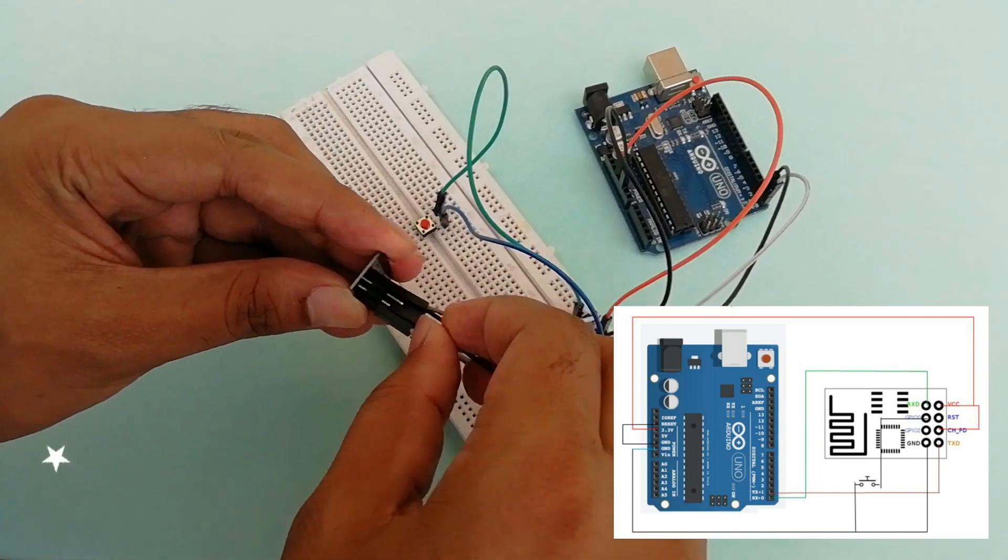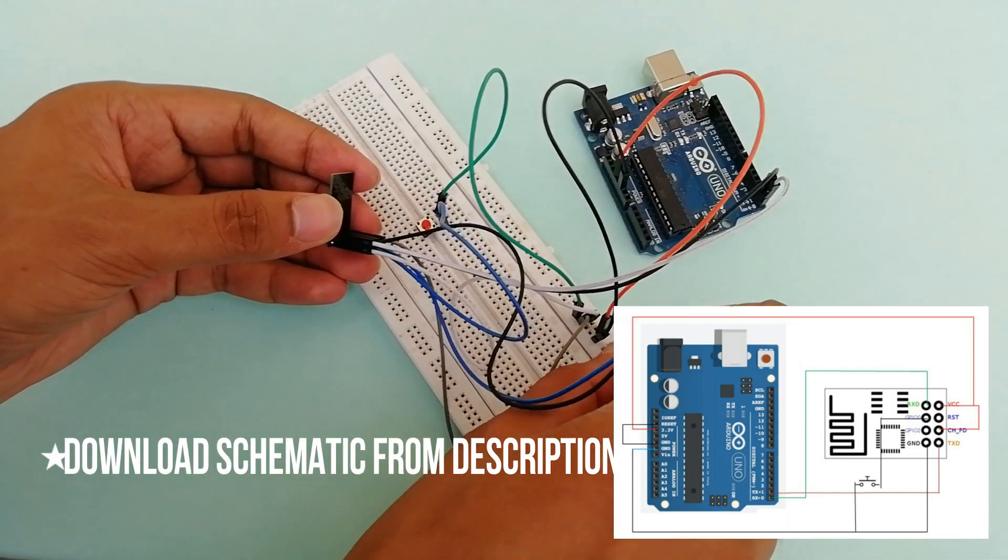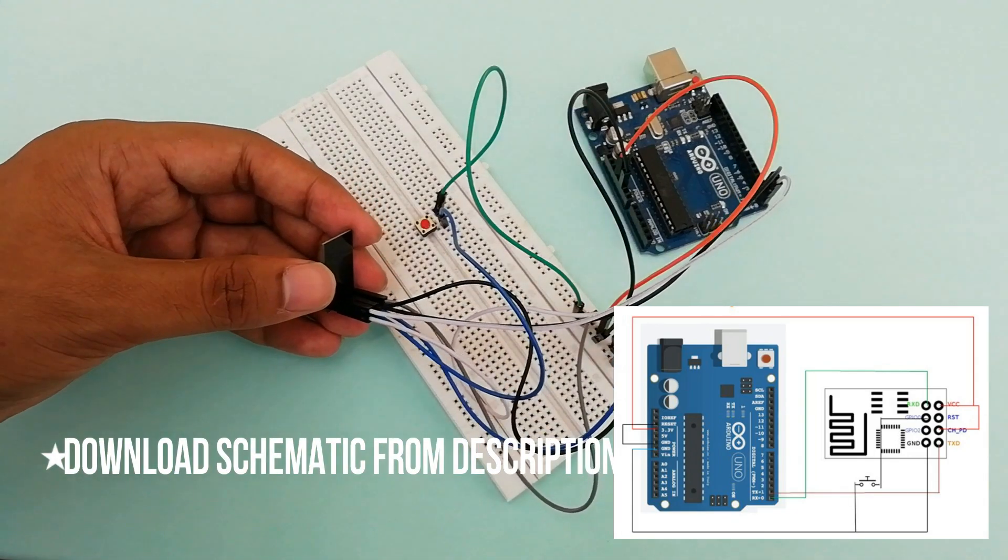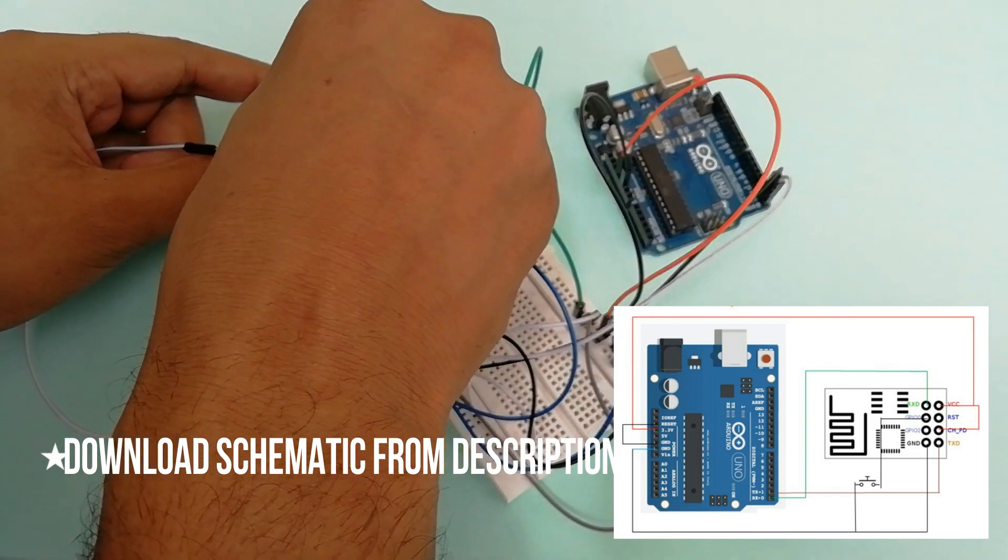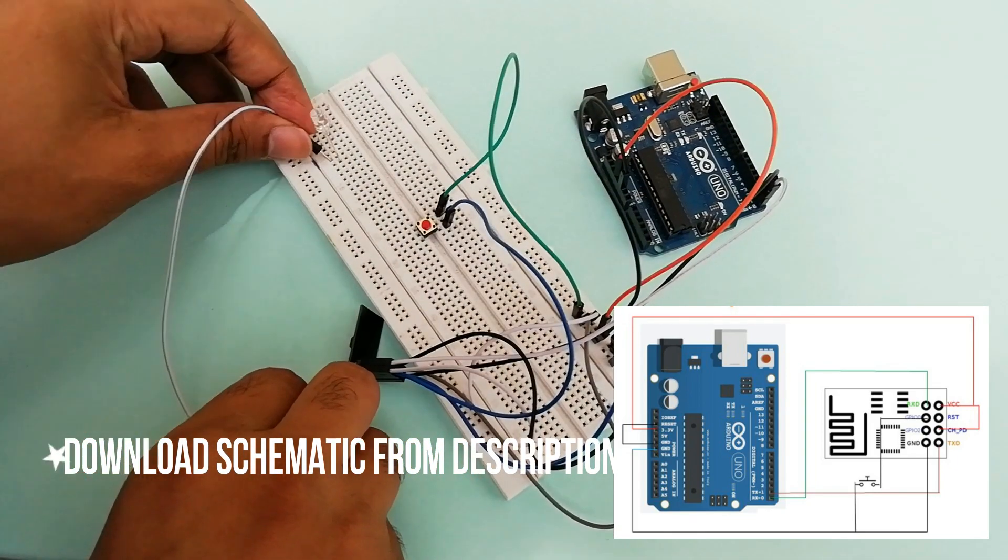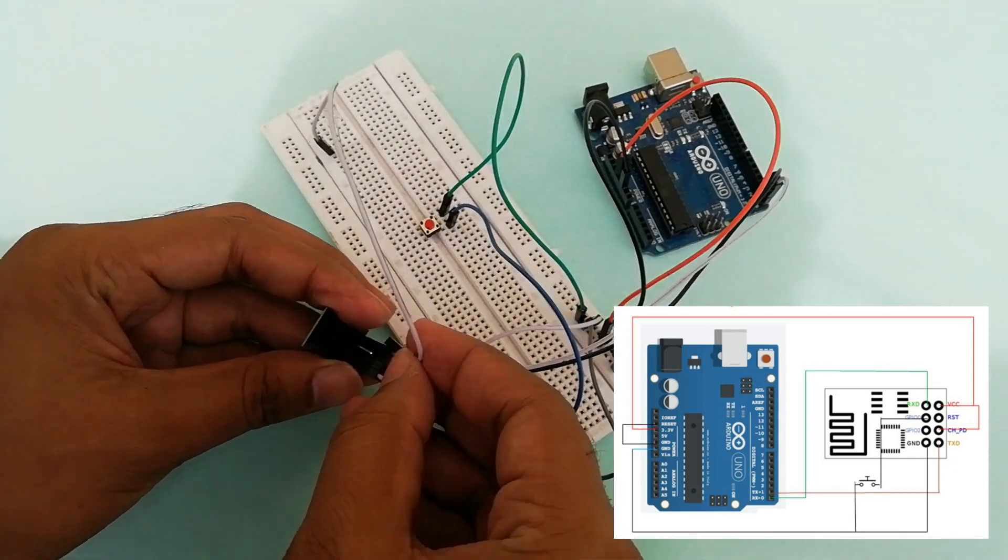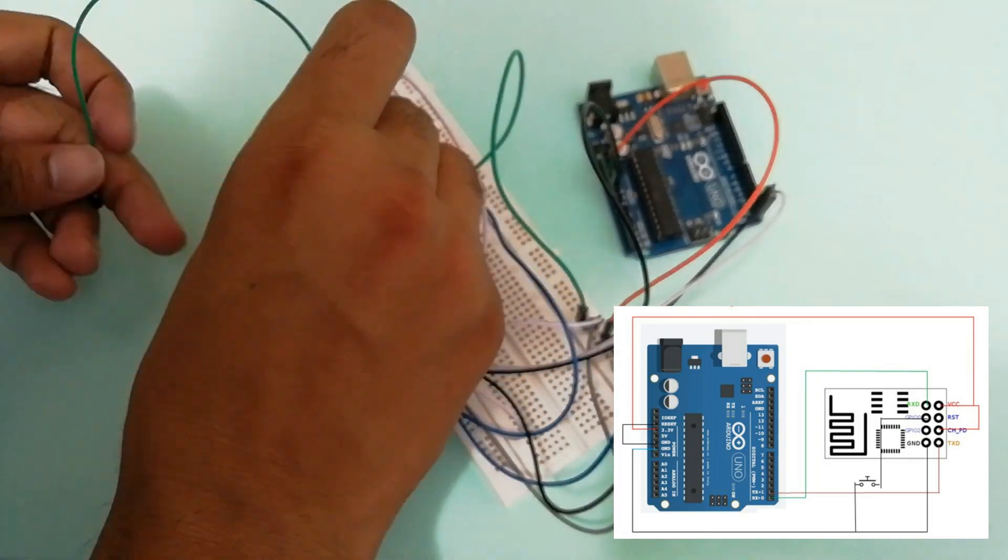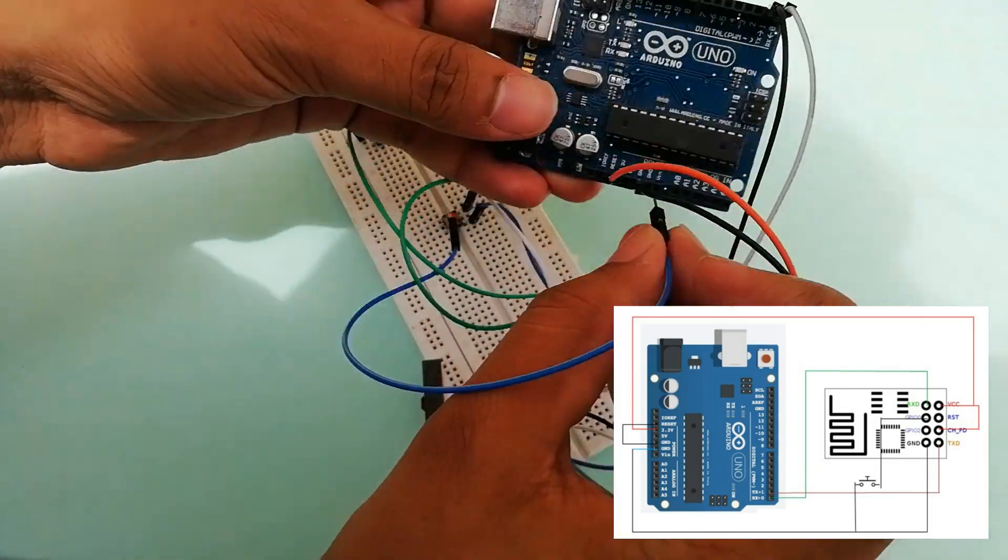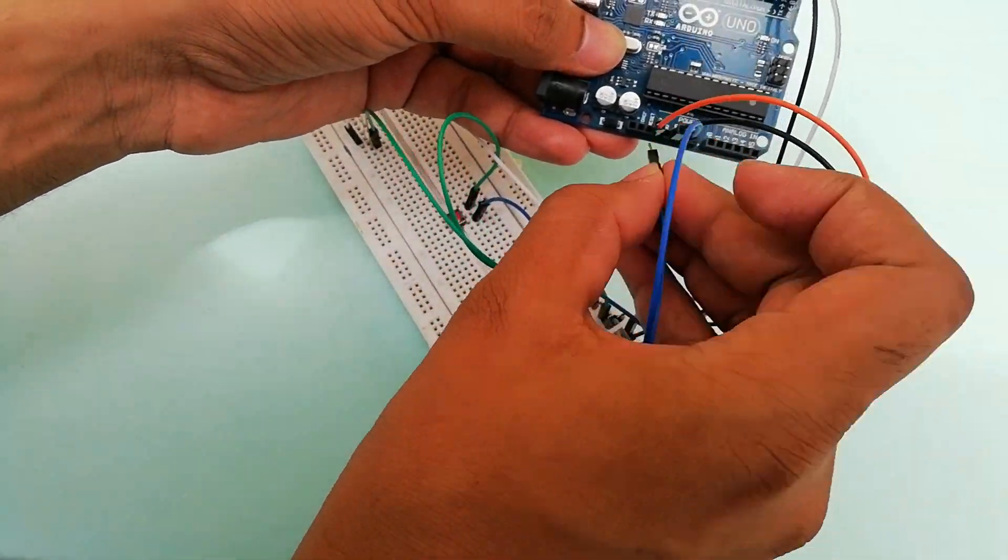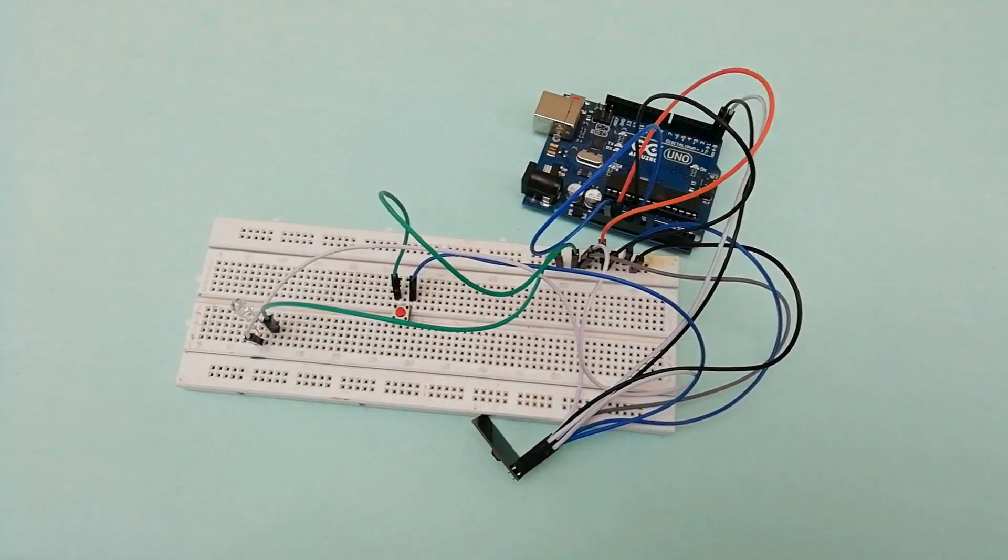Also, the RST pin, that is the reset pin, will play an important role in enabling programming mode. The RST pin is an active low pin and hence it is connected to ground through a push button. So whenever the button is pressed, the ESP8266 module will reset. Finally, the GPIO 2 pin is connected to an LED to test the working of the program.